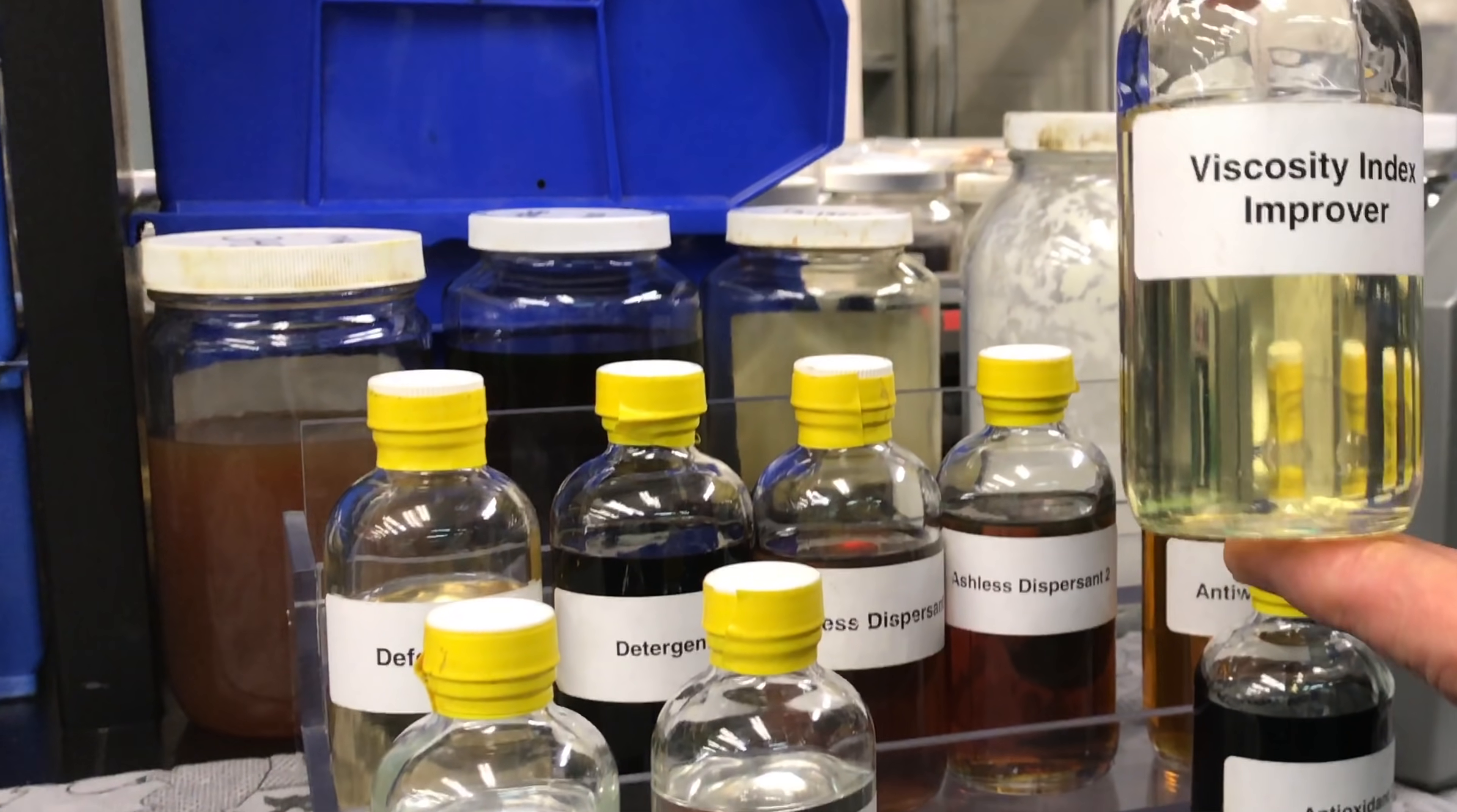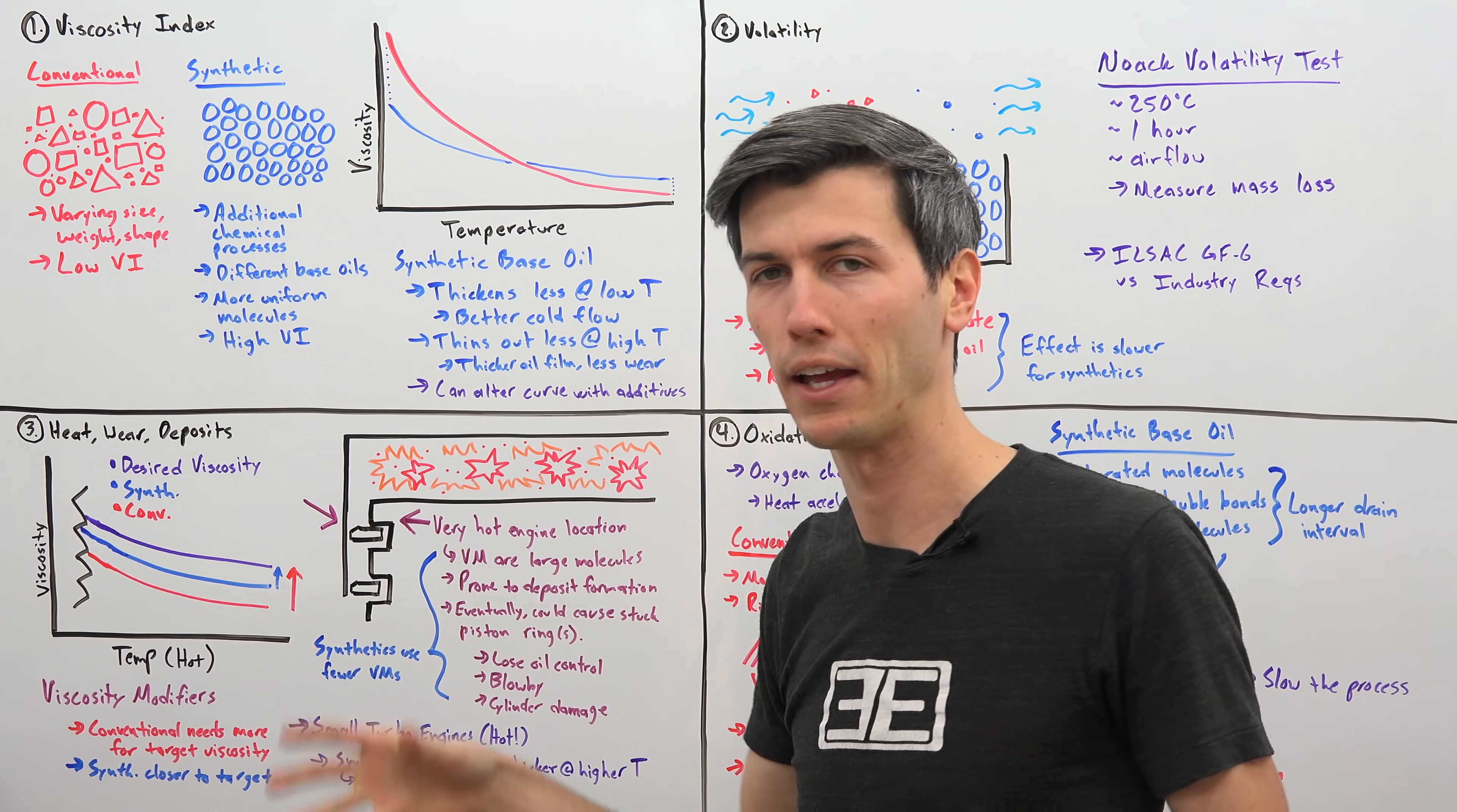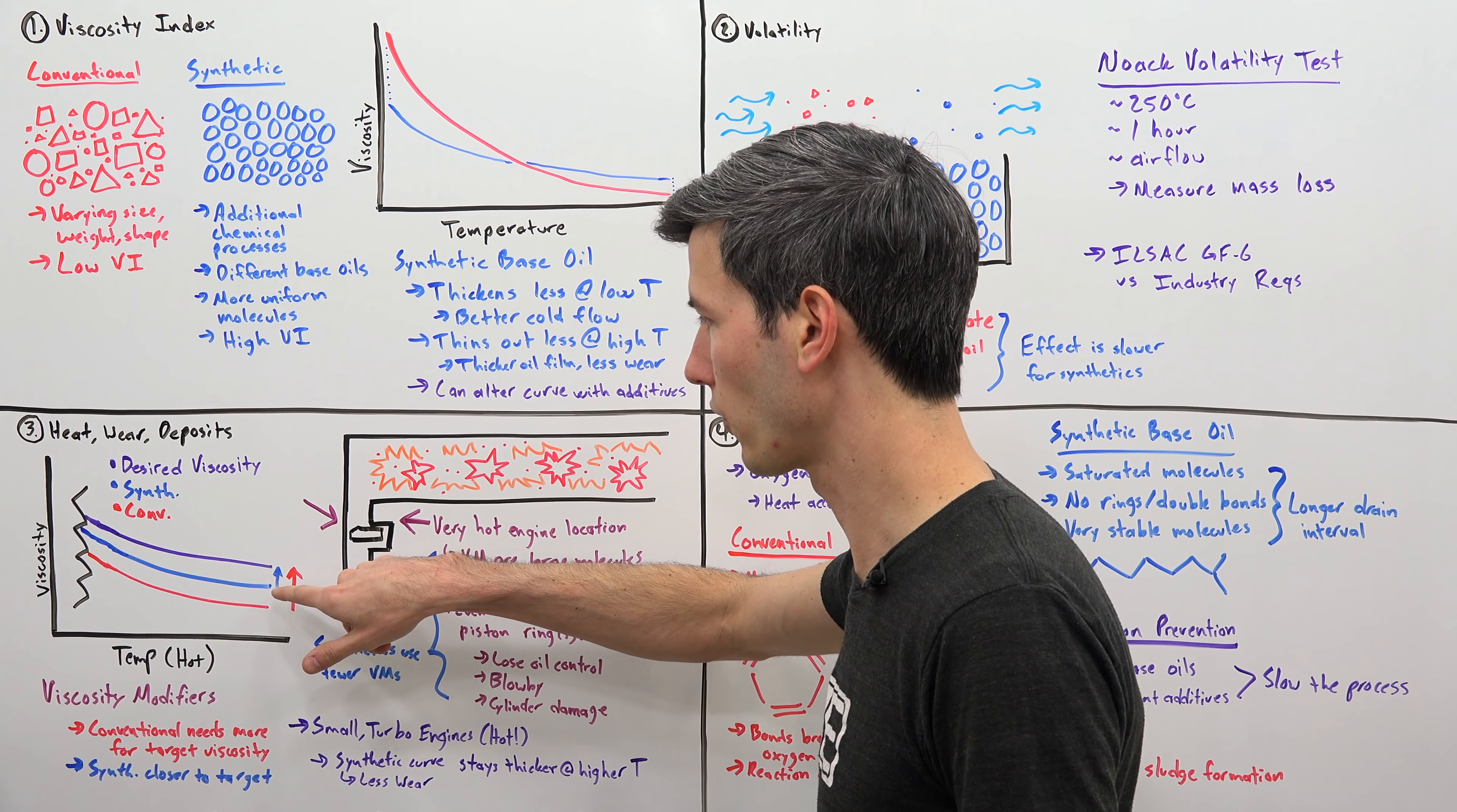I mentioned earlier that you can use additives to change this viscosity index of the overall oil. Let's say you're trying to create a 5w30 oil. To thicken the oil, you're going to use viscosity modifiers. With a synthetic oil, your starting point, because that base oil has a higher viscosity index, your starting viscosity at the high temperature end is higher. If you're using viscosity modifiers, which you add to help thicken that oil on the hot end, you'll need fewer viscosity modifiers for a synthetic base oil than for a conventional oil. For the conventional oil, your starting point may be down here. So you need a lot of viscosity modifiers to get it up to that desired oil weight, versus your synthetic here, you're going to need less.